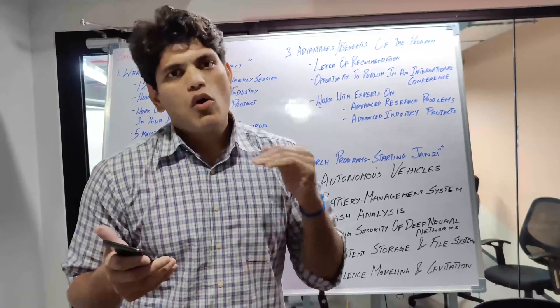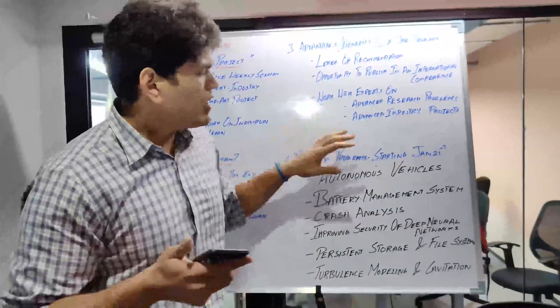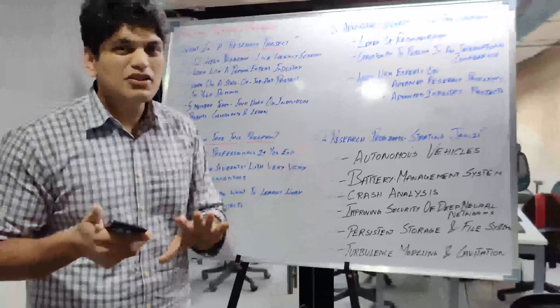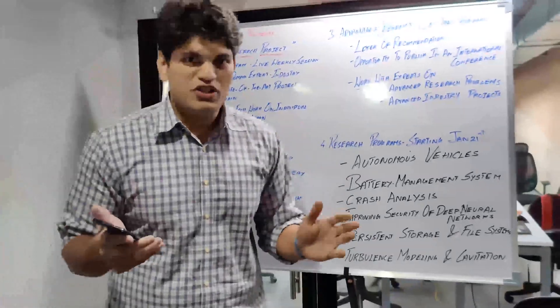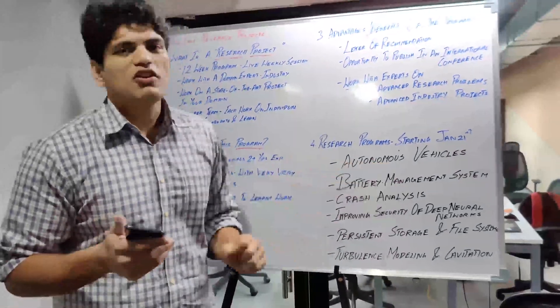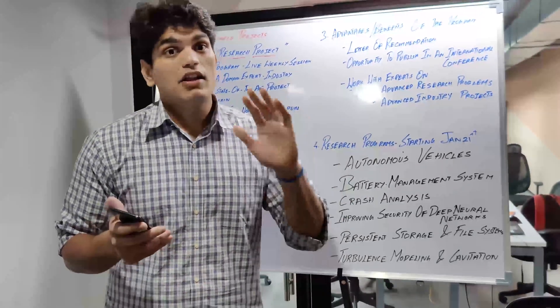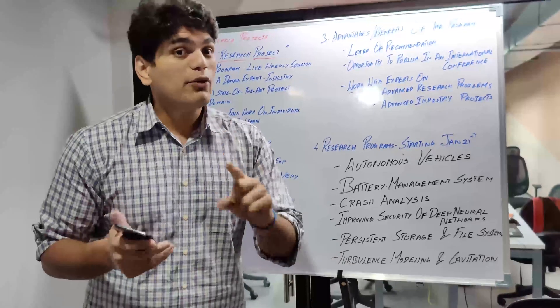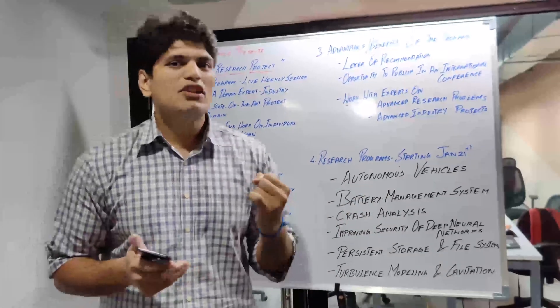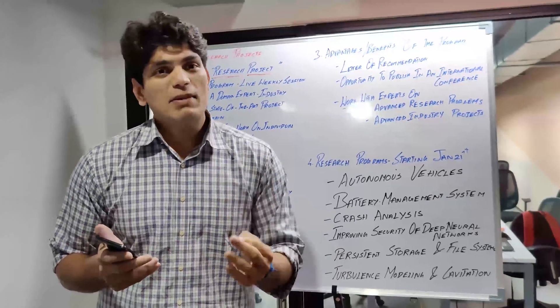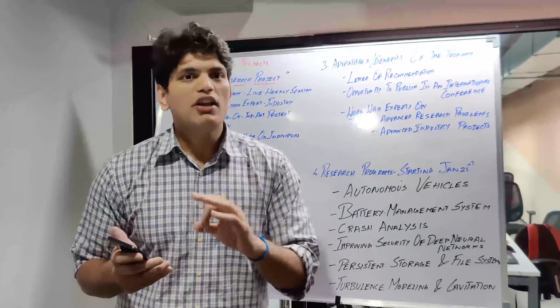So what are the research programs that are available? We have brought in six research programs for all students of engineering. First one is autonomous vehicle. I have provided the links below this video. There are five projects that you will be working on. Do take a look at it. Autonomous vehicles are especially for people in computer science or electrical electronics and mechanical engineering who want to get into autonomous vehicles. Very interesting projects.